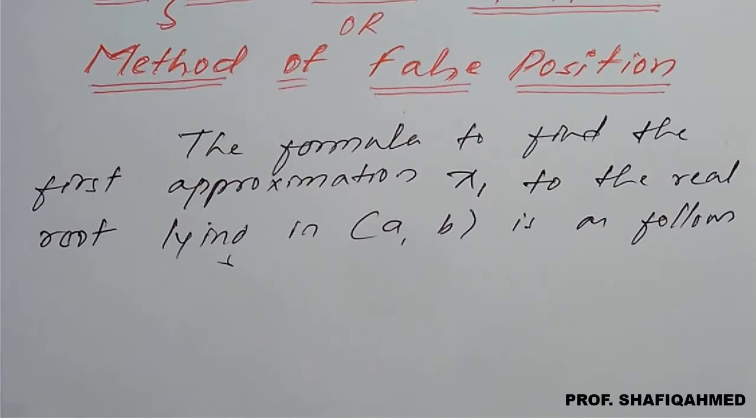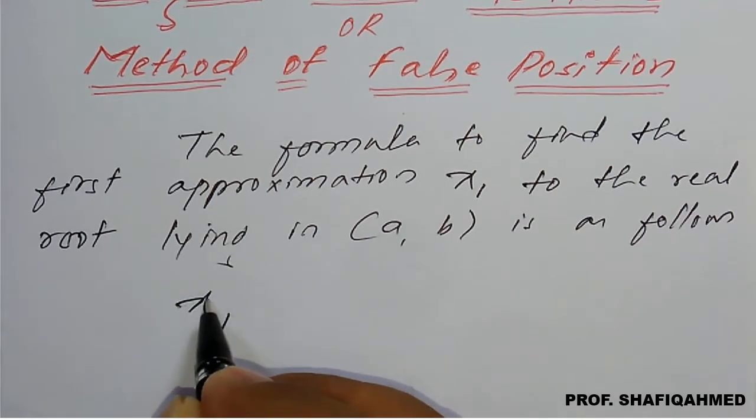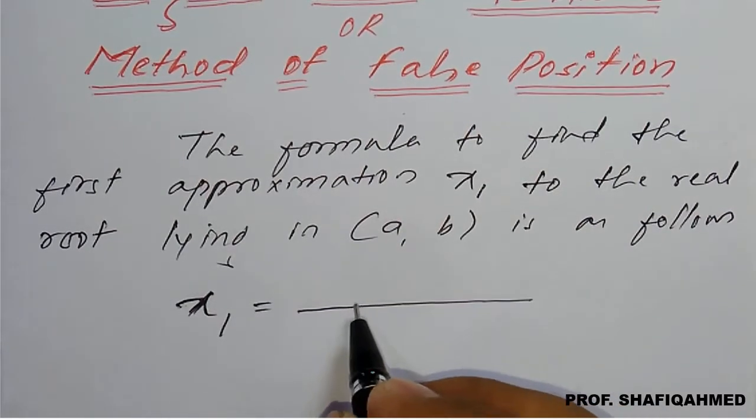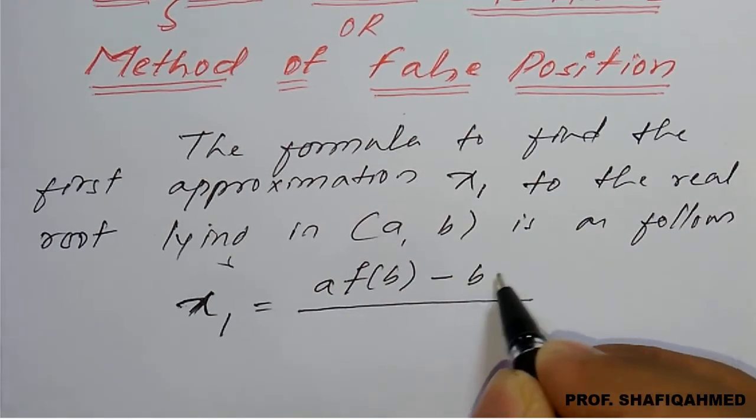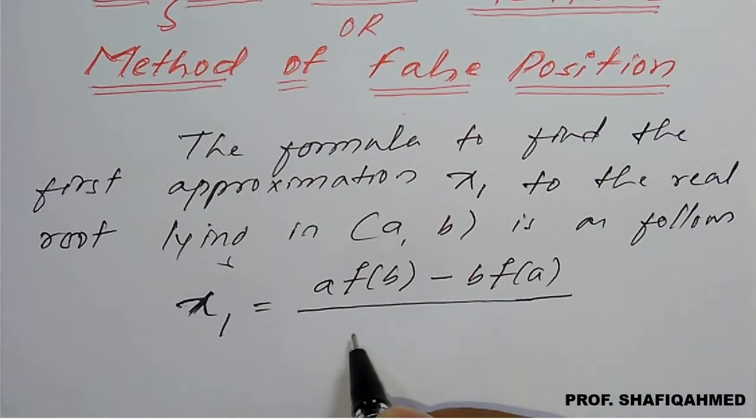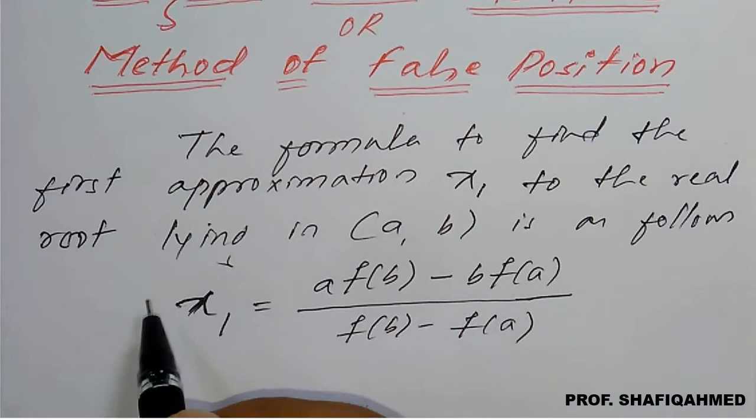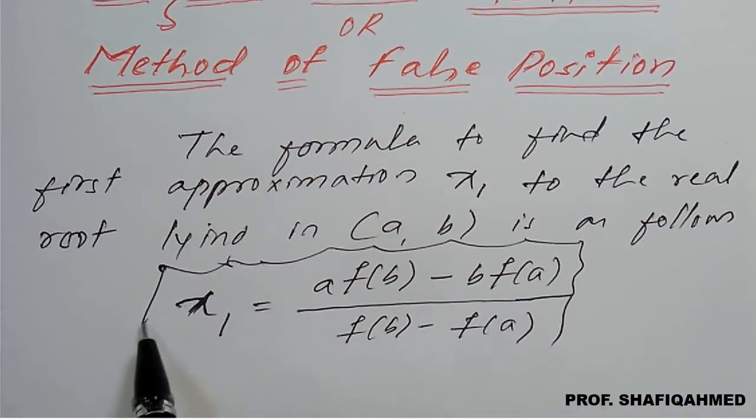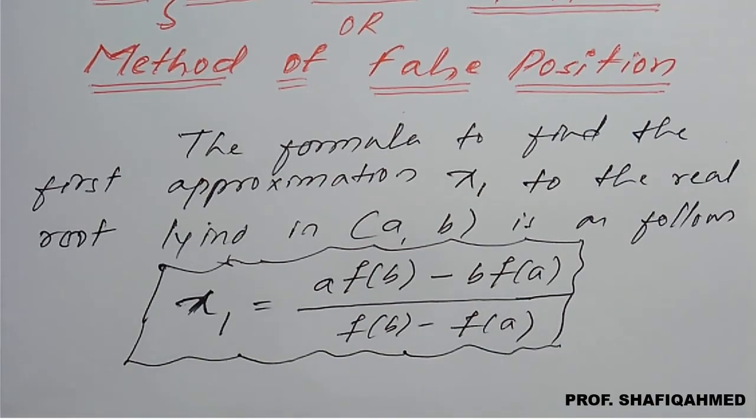The formula is here we will see so first approximation or first iteration also we call it. So it is given by x1 is equal to a into f of b minus b into f of a divided by f of b minus f of a. So this is a formula to find a root approximately and this is a first iteration.